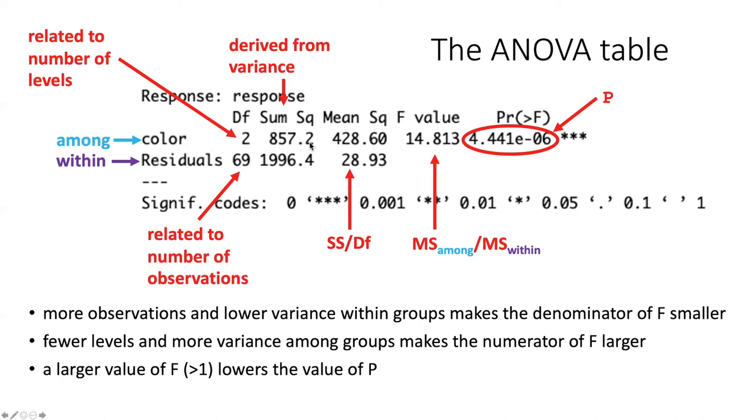The first row of the ANOVA table here is the summary of the among group variance or among level variance, and the second line is the within group variance. There are a number of columns in this table. The first one, which is DF, stands for degrees of freedom.